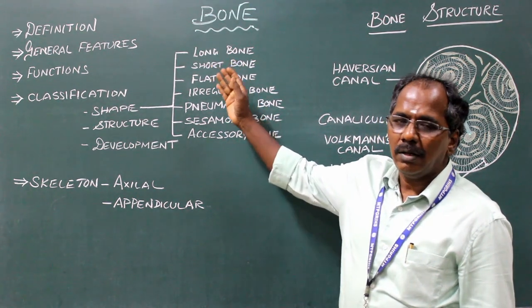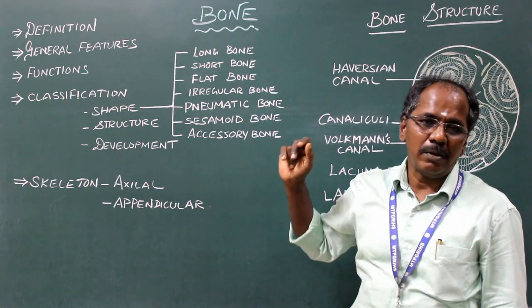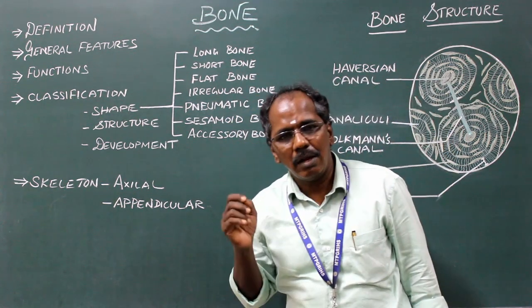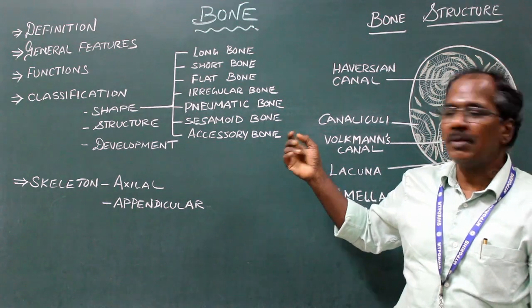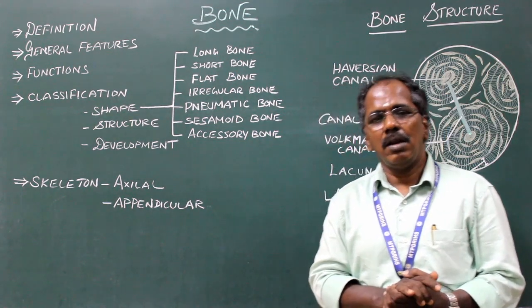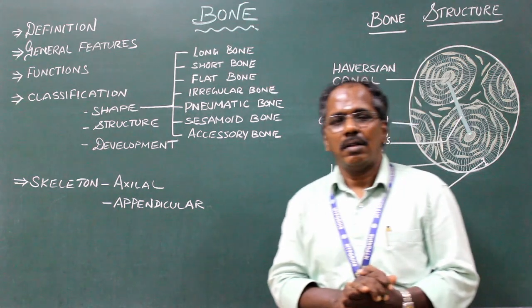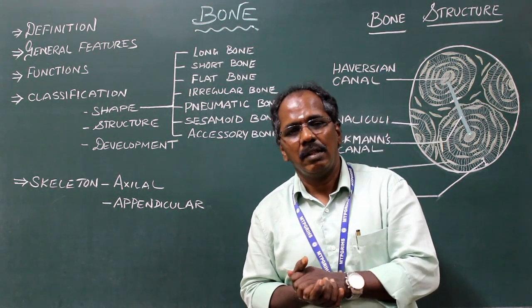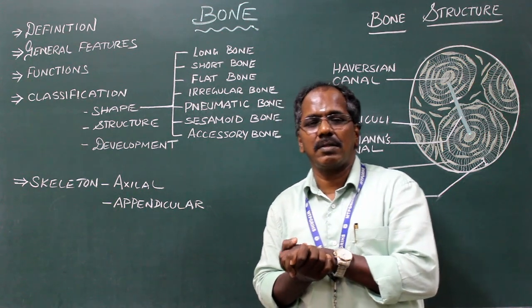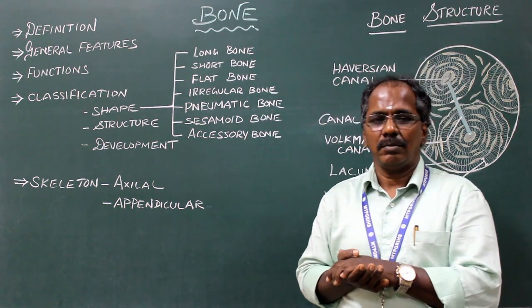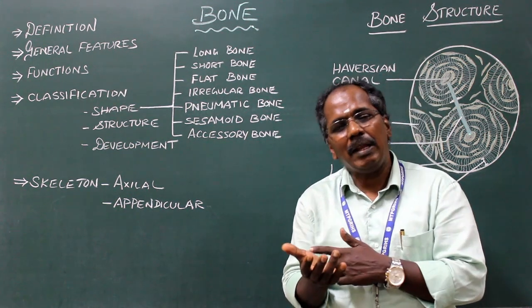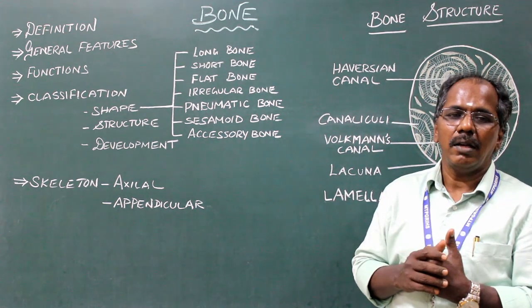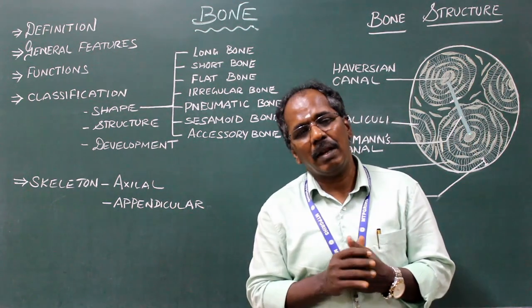long bone, short bone, flat bone, irregular bone, pneumatic bone, sesamoid bone, and accessory bone. Long bones consist of two ends and a shaft. They are usually present in the limbs. Examples: humerus, radius, ulna, femur, tibia, and fibula.